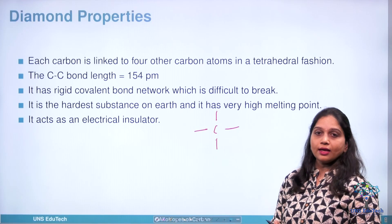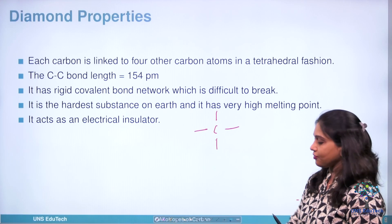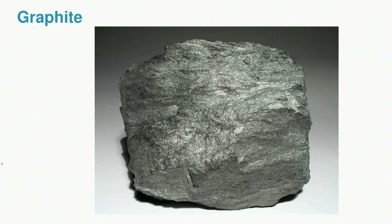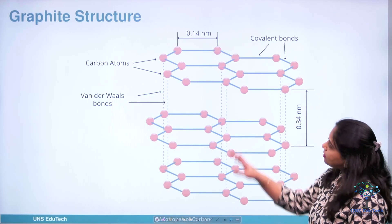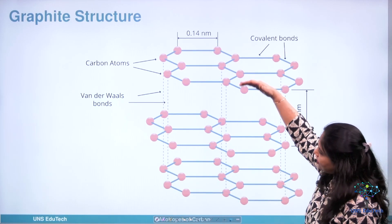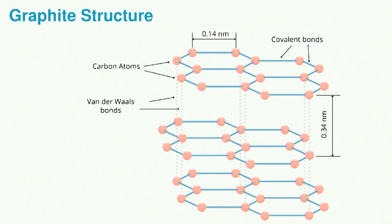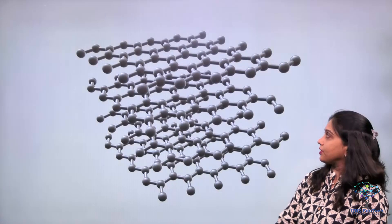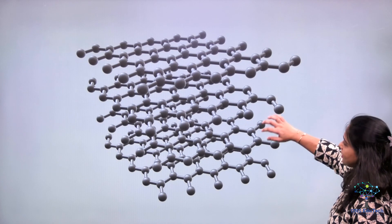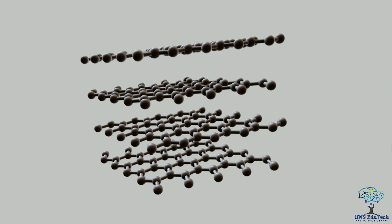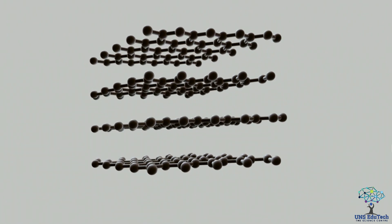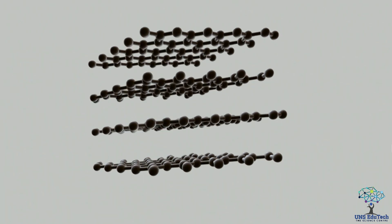Now let us see the next crystalline allotropic form of carbon: graphite. Here you can see the real picture of graphite — it is not shining like a diamond. Here is the 3D picture of graphite, where graphite is arranged in a layered structure. All these layers are connected through weak Van der Waals forces of attraction.